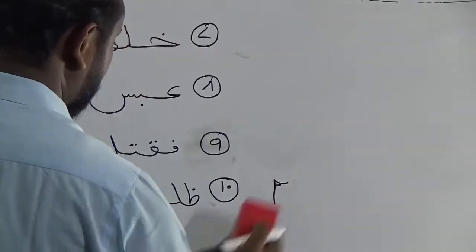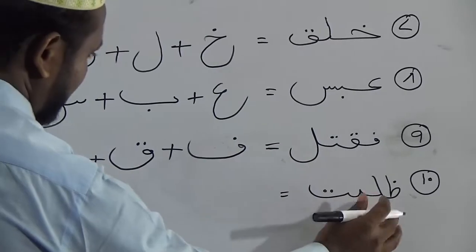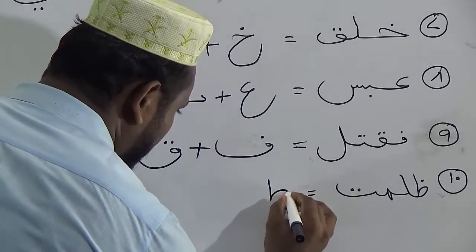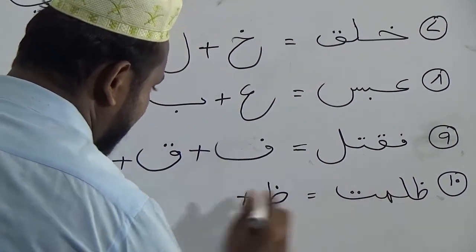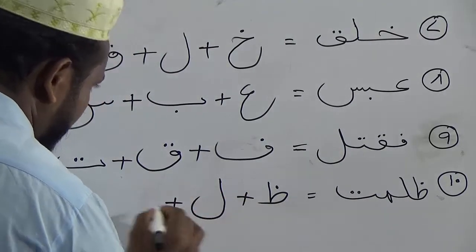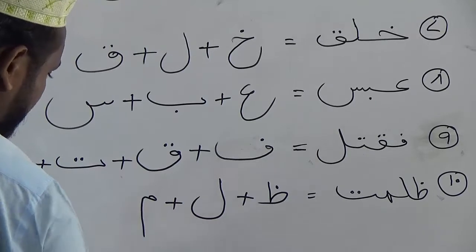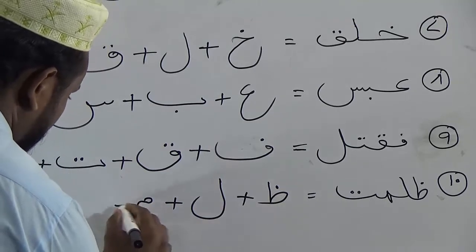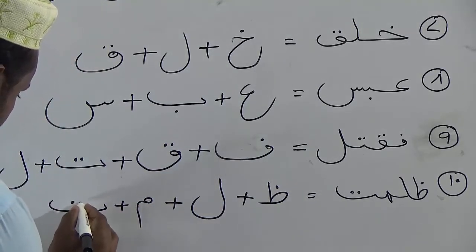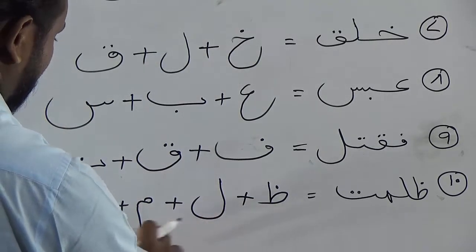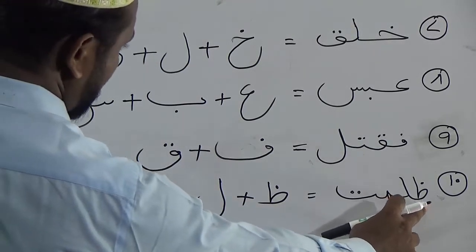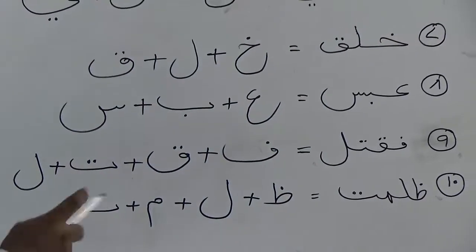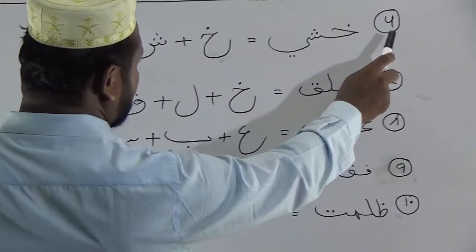So there are four letters in this word. First letter is zwa, plus second letter is laam, third letter is mim, and last letter is ta. Zwa plus laam plus mim plus ta — zulumati. Okay, now I will read again from six to ten. Number 6.